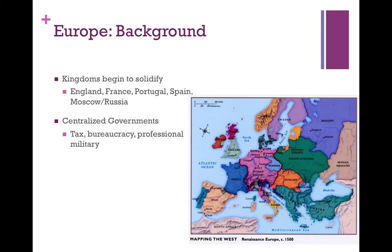You also have other kingdoms like the Holy Roman Empire and the Papal States and other regions within Europe that are slowly starting to emerge. However, they're not fully there yet, or they're going to disappear. Italy will eventually become united, but we won't see that until the 1800s. The Holy Roman Empire will fall apart in the early 1800s with the conquest of Napoleon, and then we'll eventually get Germany and Austria-Hungary out of it.